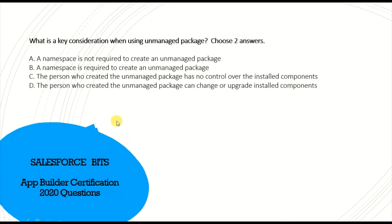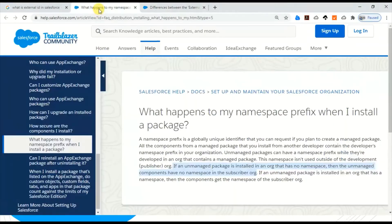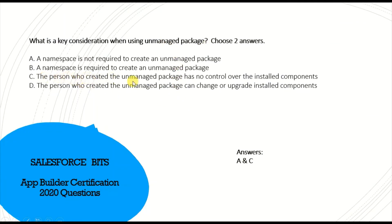Next question: what are the key considerations when using an unmanaged package? The correct answer is A and C. A: a namespace is not required to create an unmanaged package — unmanaged components have no namespace in the subscriber org wherever it's installed. C: the person who created the unmanaged package has no control over installed components — once it's installed in another org, the creator has no control over it.